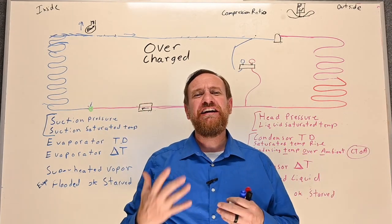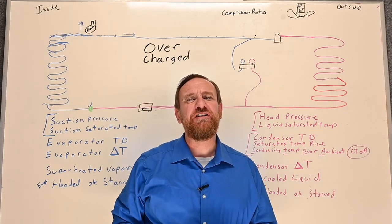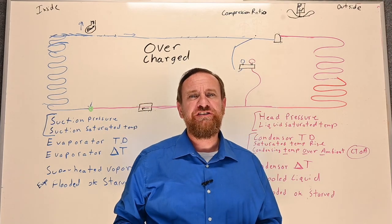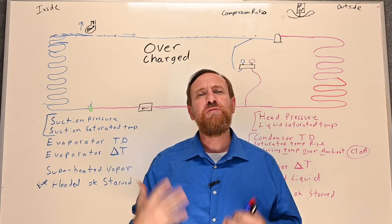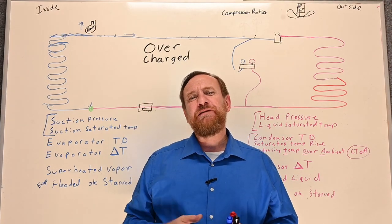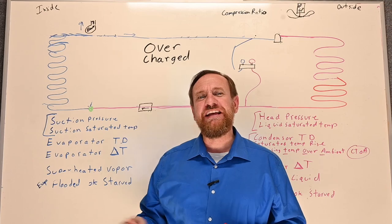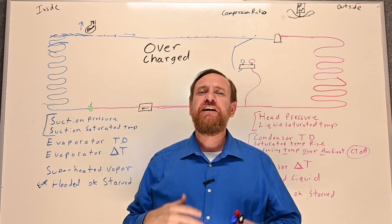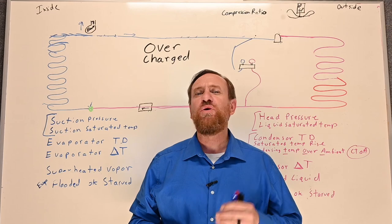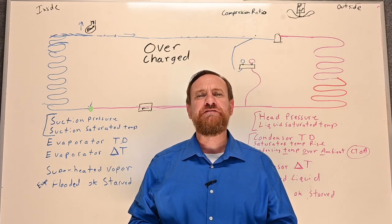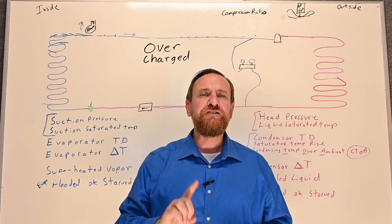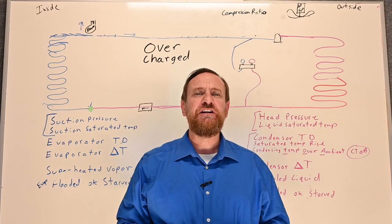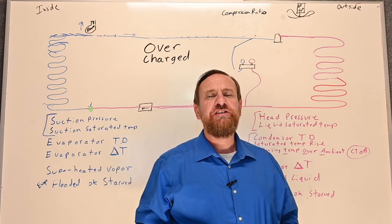When we've done a refrigeration cycle, let's see how some different effects are going to play on that. We're going to first talk about an overcharged system — too much refrigerant. I've got to break this down between two parts: a fixed orifice metering device, which is just a fixed hole, and also a thermostatic expansion valve or electronic expansion valve that opens and closes. We're first going to talk about a fixed orifice metering device.